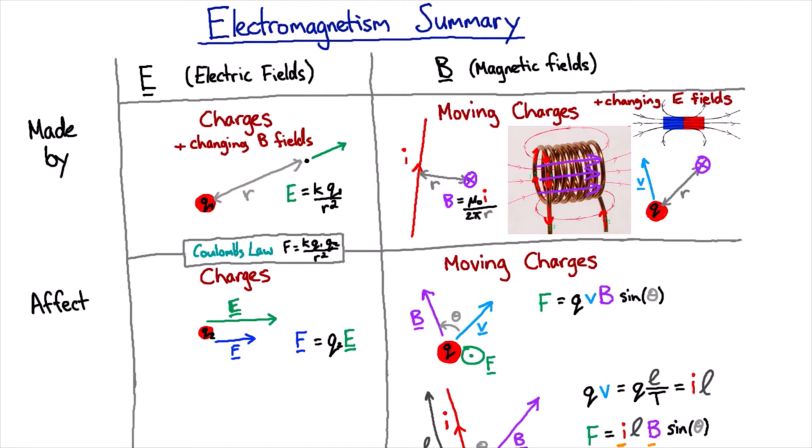It had an extra effect. He looked at those equations and he saw, well if I have a changing electric field I'm going to make a B field, and if I have a changing B field I'm going to make an electric field. Hey, wait a minute, these can propagate!